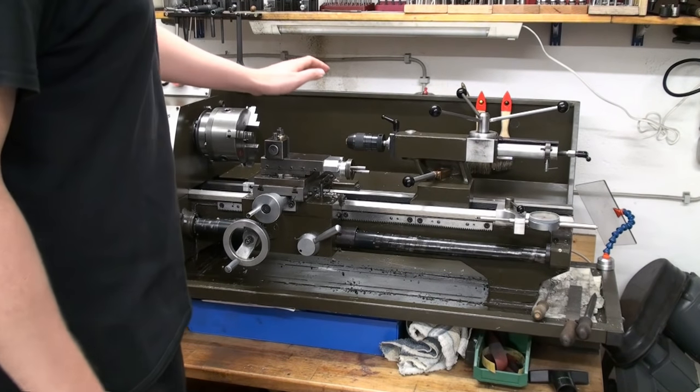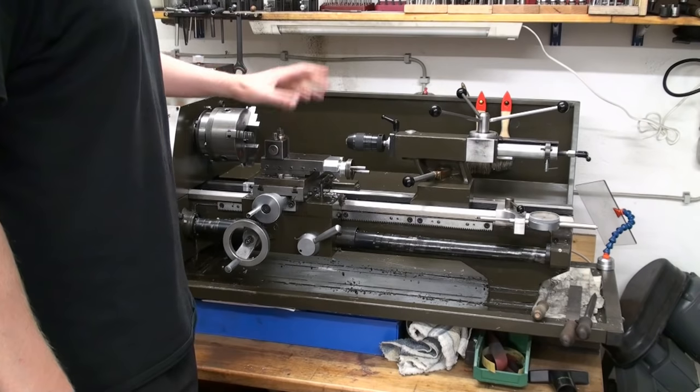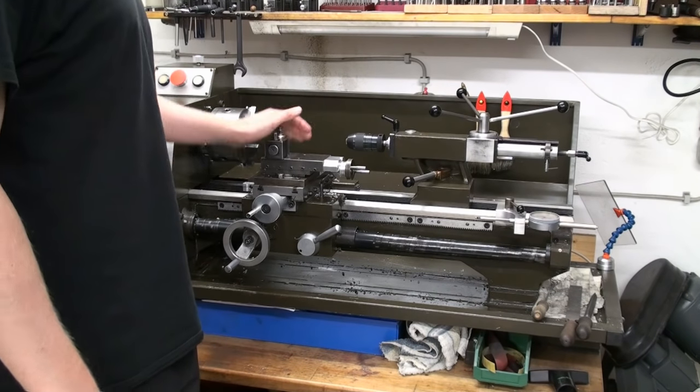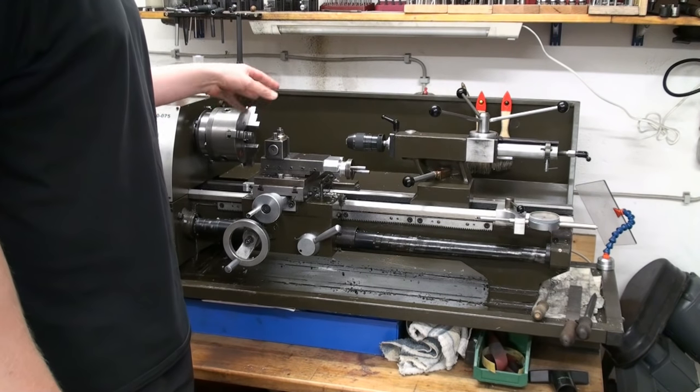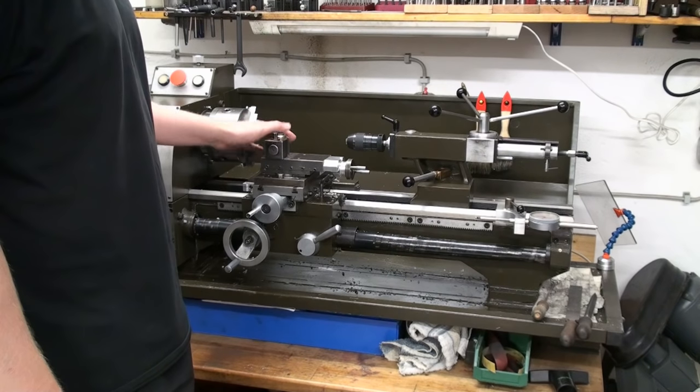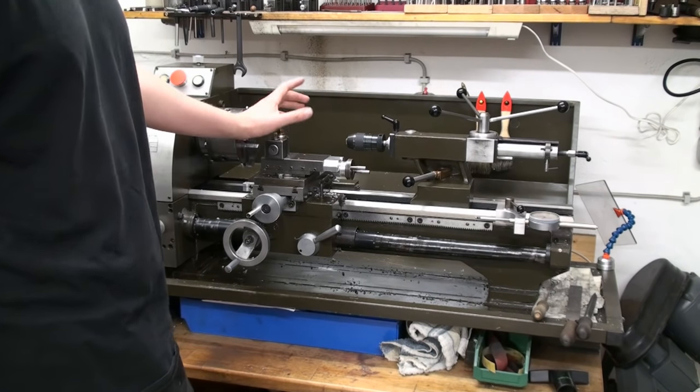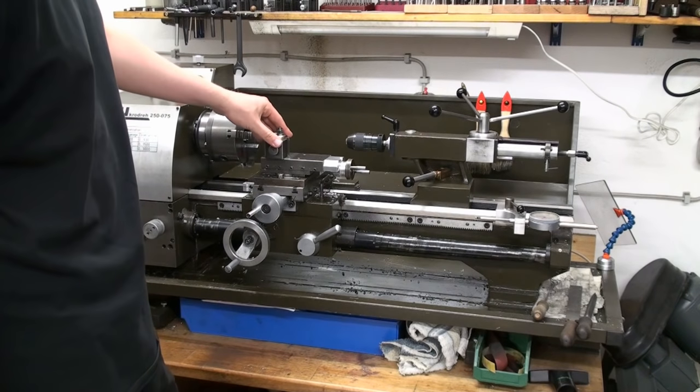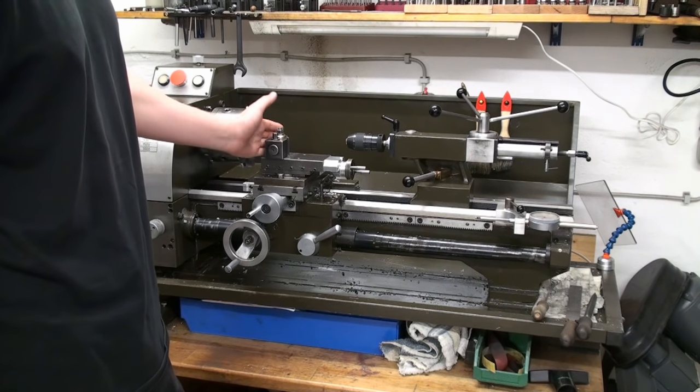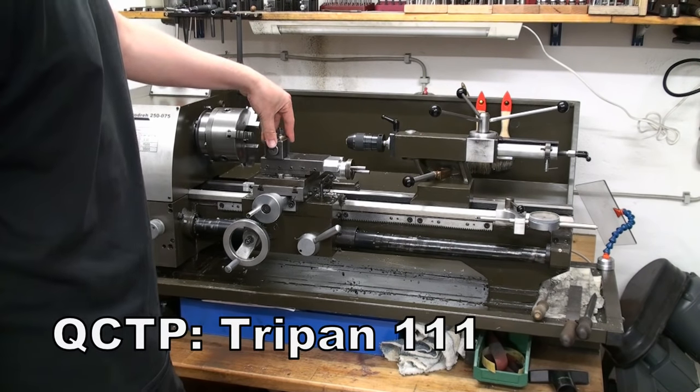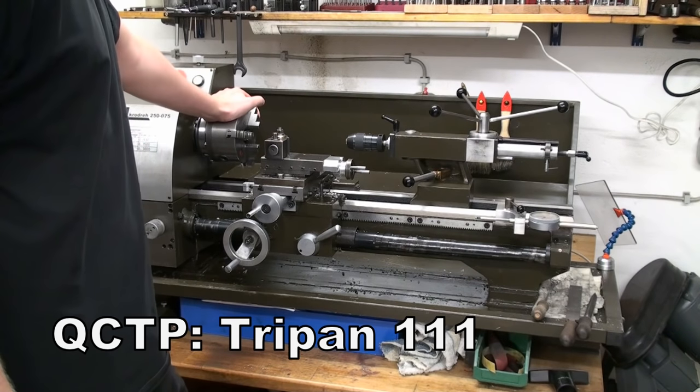It came with a multi-fix 40 position tool post that's very common here in Germany but the size A I got on the machine is almost a bit too big for this machine so I changed later over to this Swiss made 3lb tool post holder.